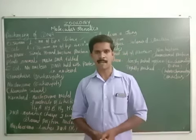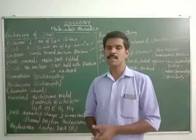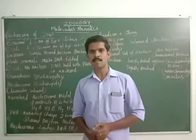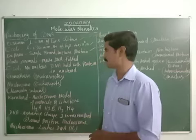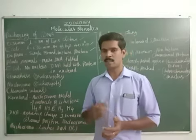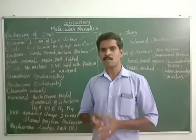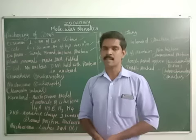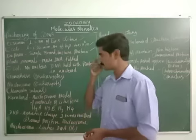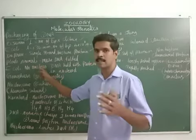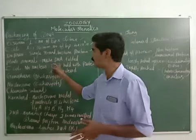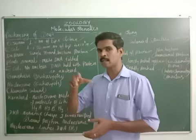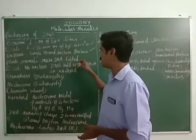In plants and animals, the number of DNA molecules is much higher than in bacteria cells. So all these large numbers of DNA molecules are folded many times, so that they can fit inside the chromosome and inside the nucleus.